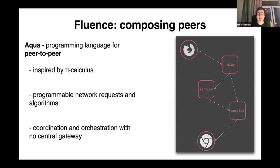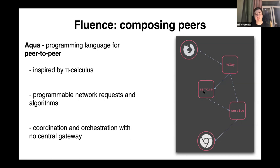Clients here on all slides are just a browser — just a client that works inside a browser. Here you can see two clients: one Firefox and one Chrome. Imagine that the Firefox guy wants to send some data to the Chrome guy. He wants to compose some services, call some services, or combine some data. And service is actually one of the most important concepts inside Fluence.